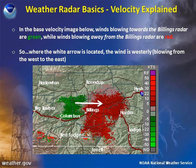Base velocity products are good at showing straight-line winds behind fronts and ahead of thunderstorms. Velocity data also enable us to track low-level boundaries where winds abruptly change direction. In this example, the wind is generally blowing west to east and is not very strong, as indicated by the dark green colors west of Billings and the dark red colors east of Billings.